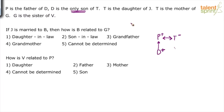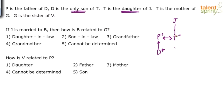P is the father of D; D is the only son of T. So P and T are a married couple and D is their son. T is the daughter of J — now the relation 'daughter' here is not needed to identify the gender of T, because from the previous statement you already know T is female since P is the husband and T has to be the wife. T is the daughter of J, so J is the parent of T. Again, J's gender is not known — it can be a male or female parent.